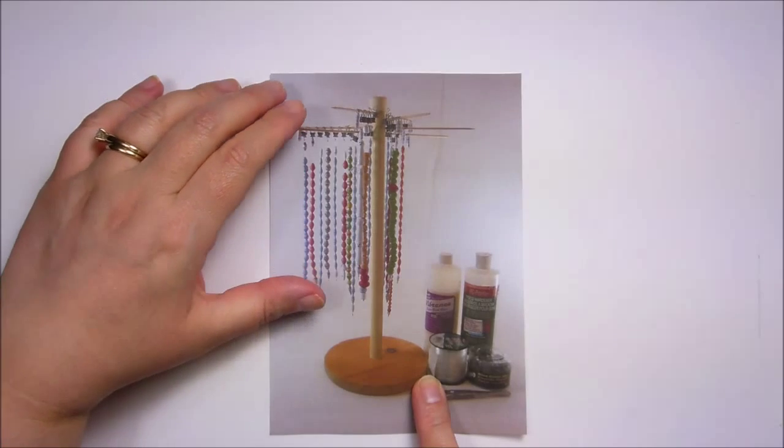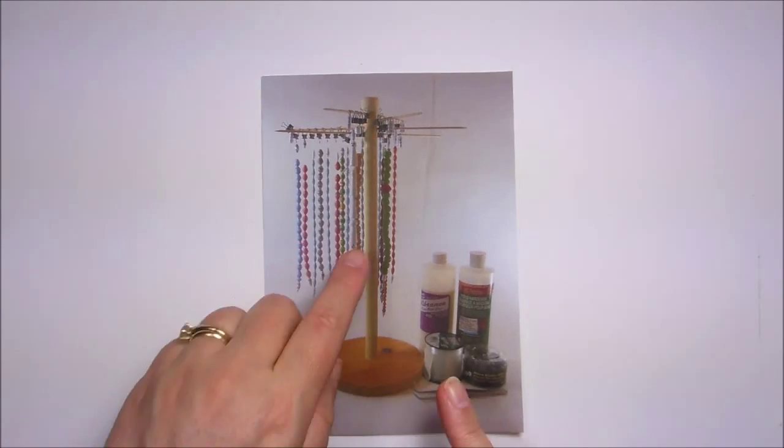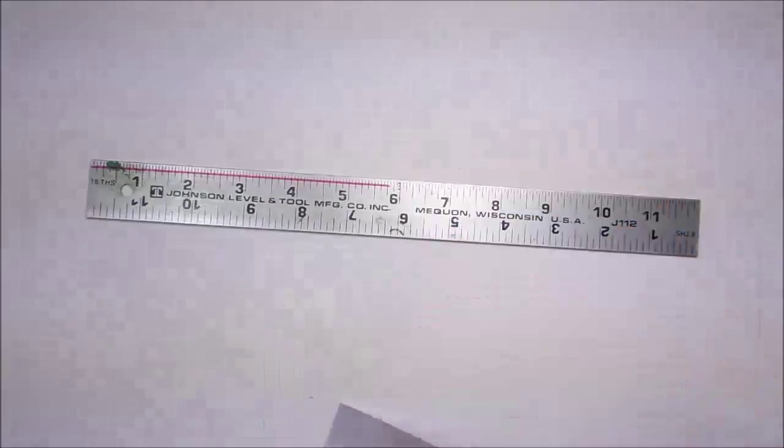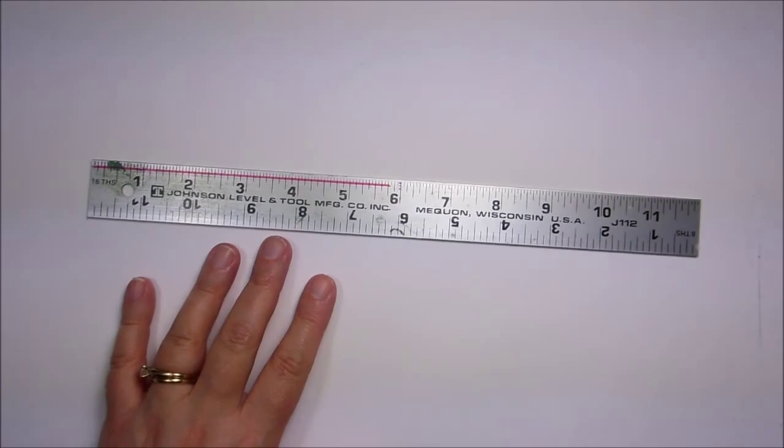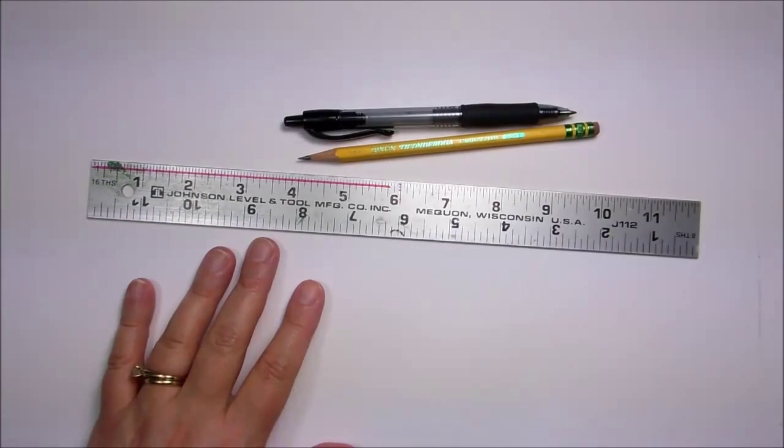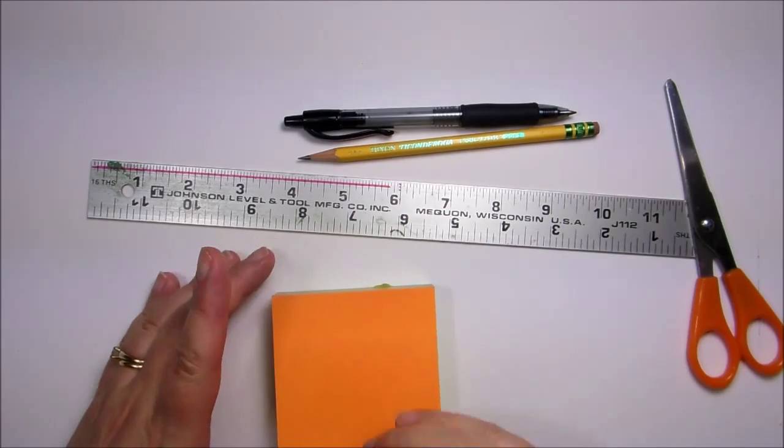It's quite easy to make. The first thing you're going to do is make a template for the little holes at the top. Bear with me one moment while I get my supplies. Here's the ruler you're going to need, a pencil, you're going to want to use a black pen, you're going to need some paper and a pair of scissors.